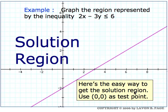If you took a point on the other side of the line, like the point where x is six and y is zero, substituting those coordinates: 2 times 6 is 12 minus 0 less than or equal to 6. Twelve less than or equal to six is a false statement. This point does not satisfy the original inequality. So the solution region is the points on this side of the line, and we determine that by using the origin as a test point.